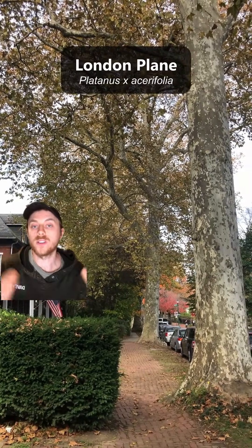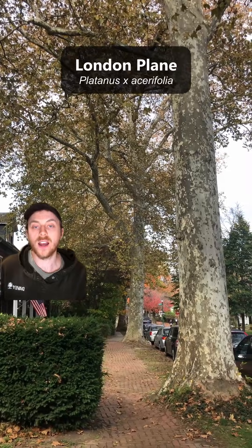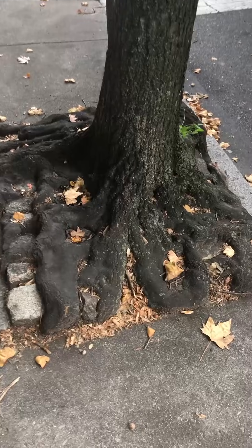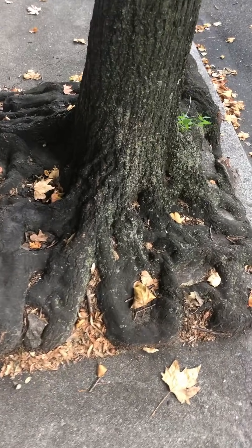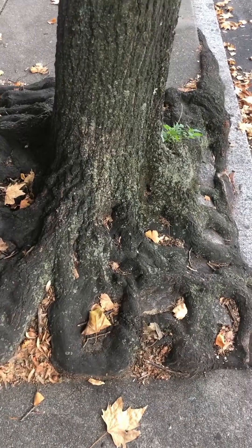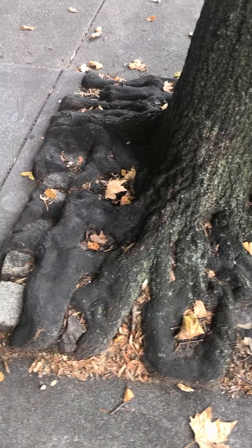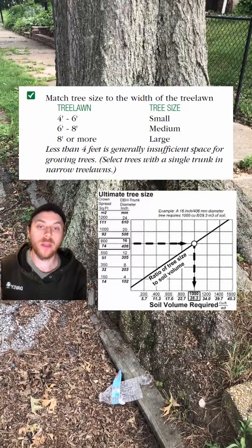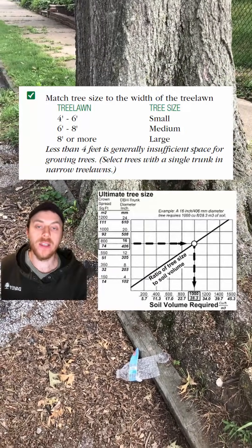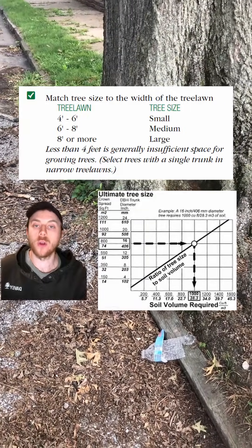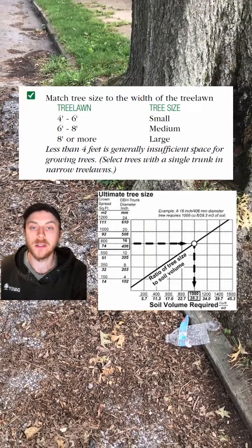If we want a large tree in these spots, we must widen the pits — either making them wider or longer — so that there's more space for the growing roots and trunk of the tree. For example, a width of at least eight feet is recommended for large maturing species.